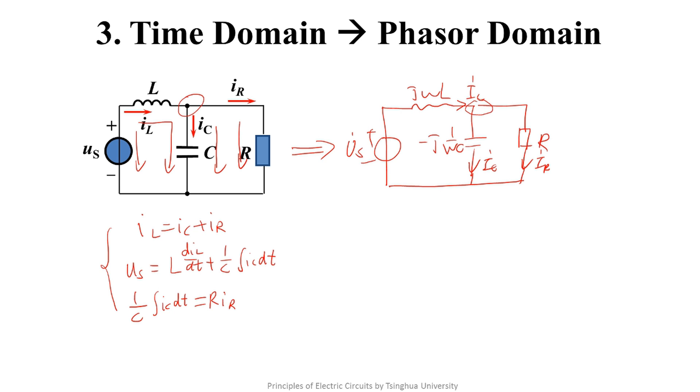By applying KCL on this node again, we know phasor IL equals phasor IC plus phasor IR.